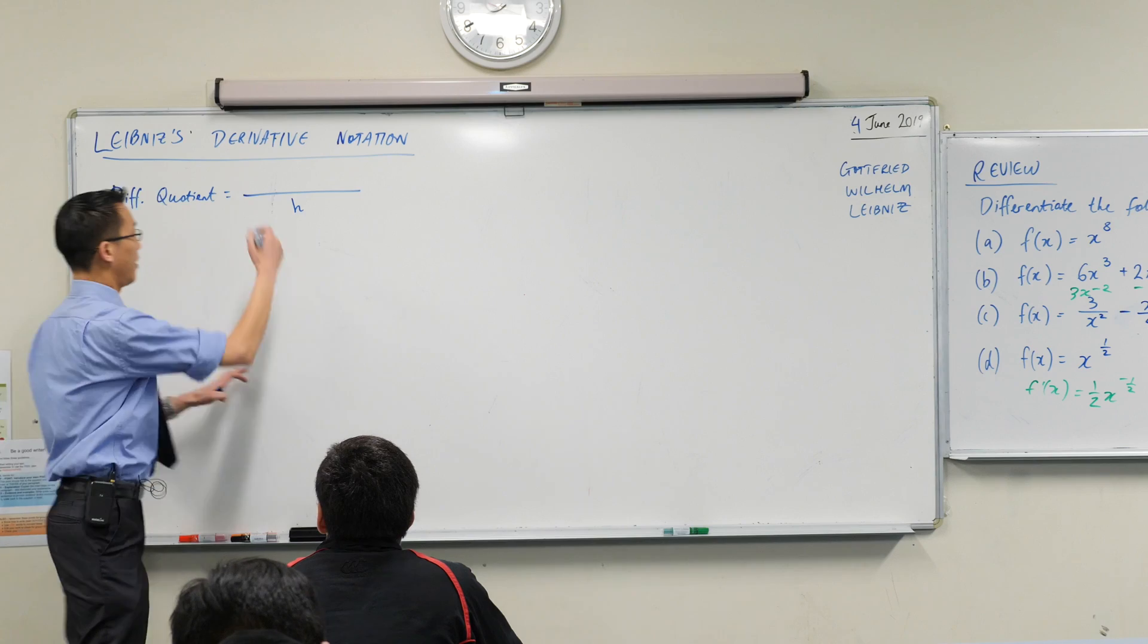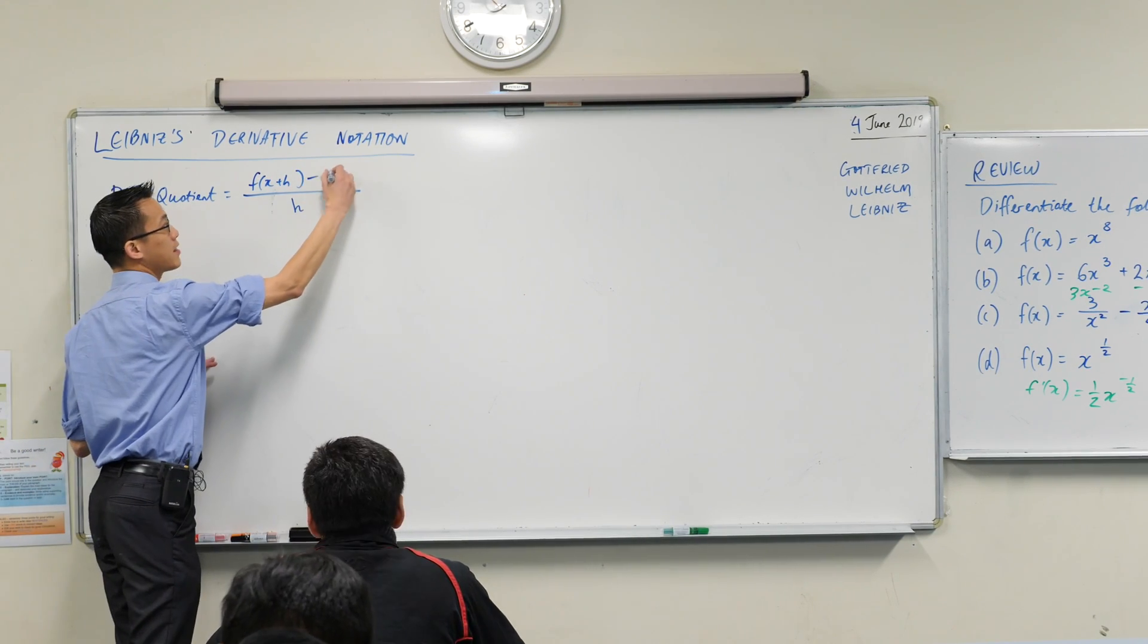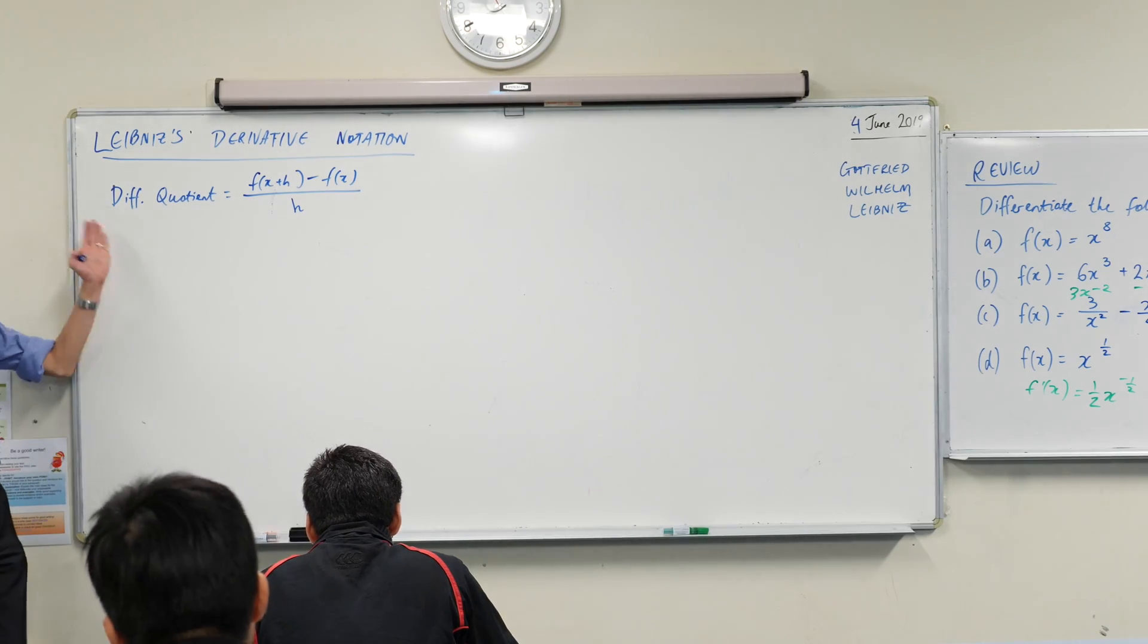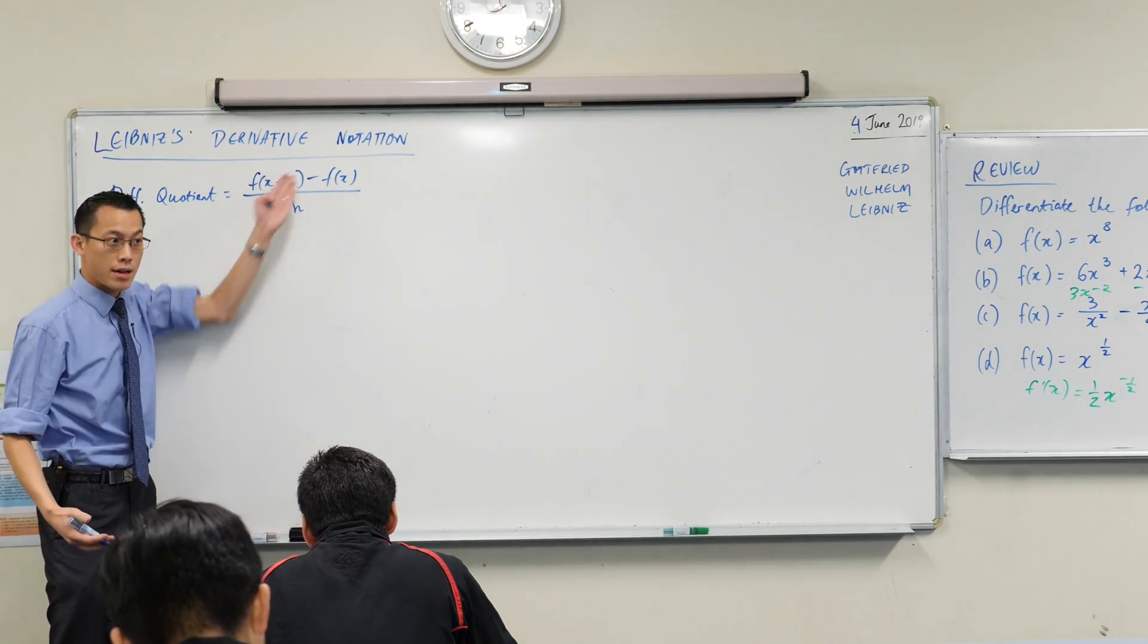It's f of x plus h. Very good, f of x plus h, and then we take the difference, it's the difference quotient after all, and then we divide. So this is, we got this from gradient, right, rise over run.